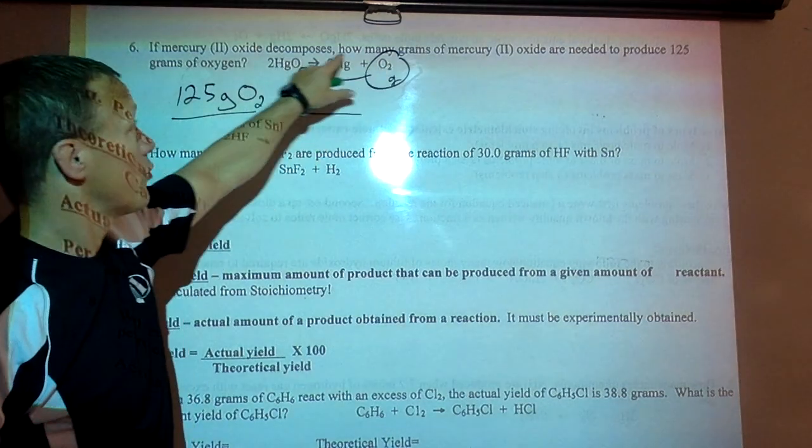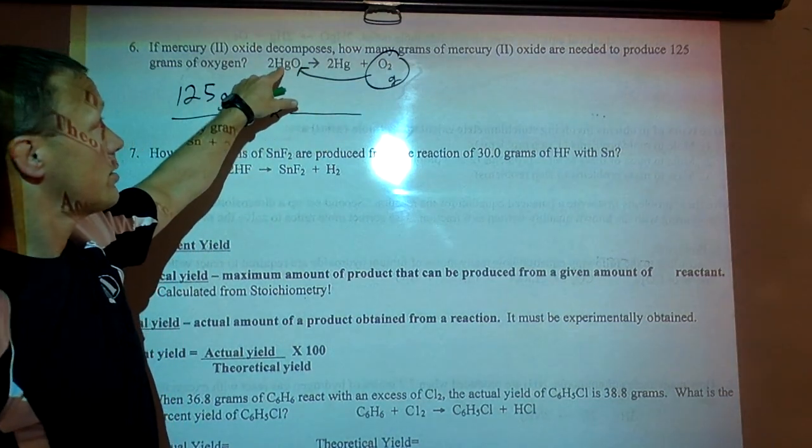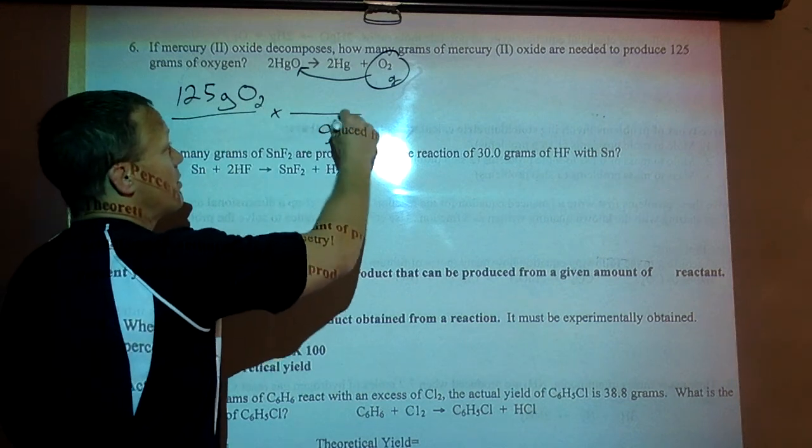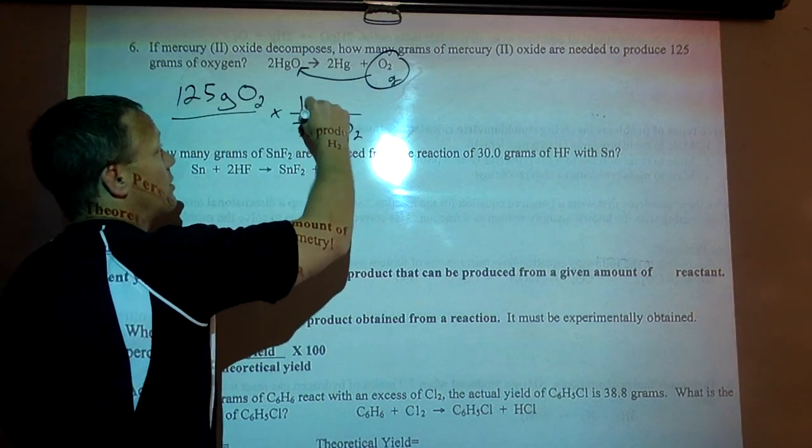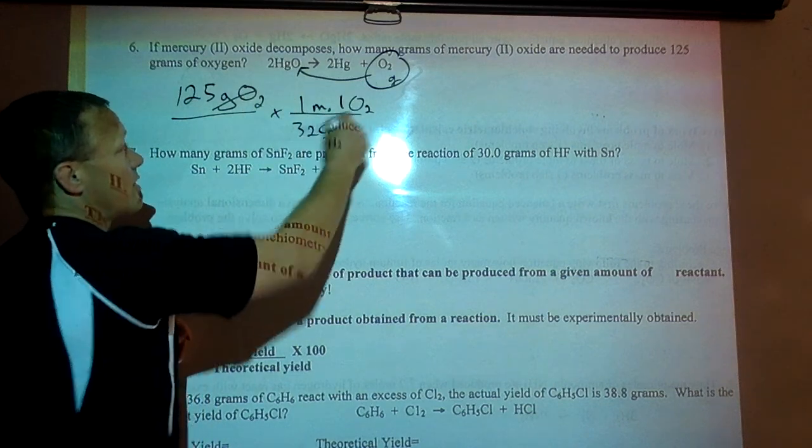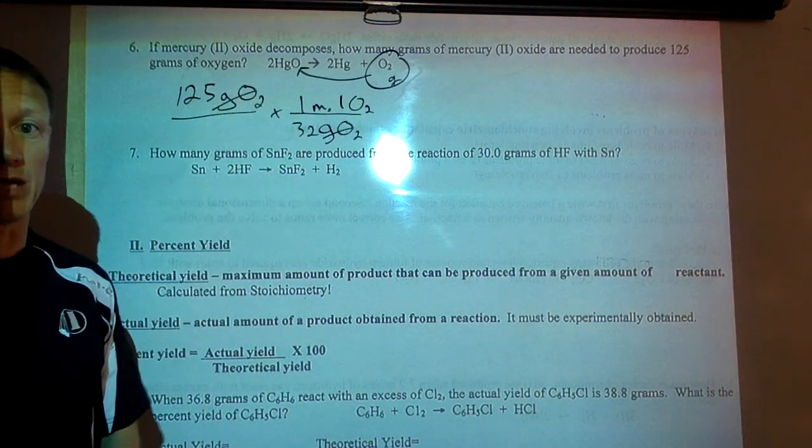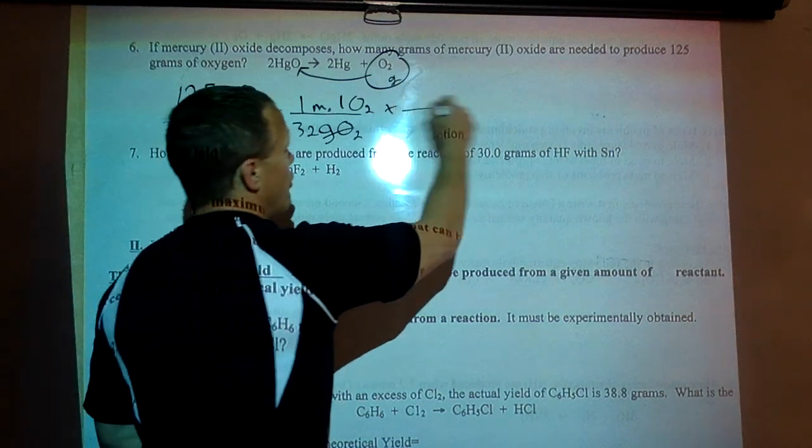So these grams into moles. Ratio. Turn this back into grams. Grams of oxygen down here. It's 32 grams per mole of oxygen. So that cancels. So that's how many if we divide those two that's how many moles oxygen we have.